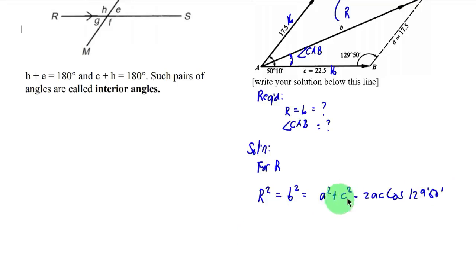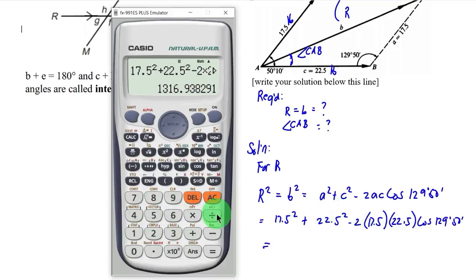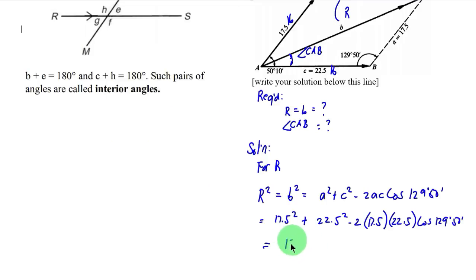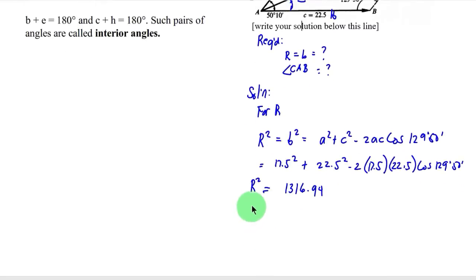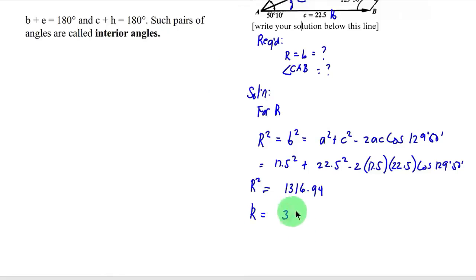Substituting: a is 17.5 squared plus c is 22.5 squared minus 2 times 17.5 times 22.5 times cosine of 129 degrees 50 minutes. This equals 1316.94, which is r squared. Therefore r equals the square root of 1316.94, giving r equals 36.29 pounds.